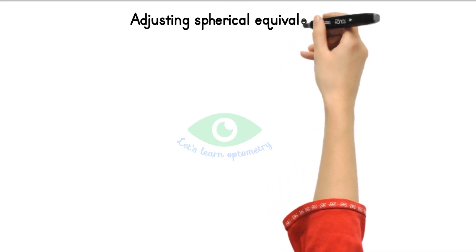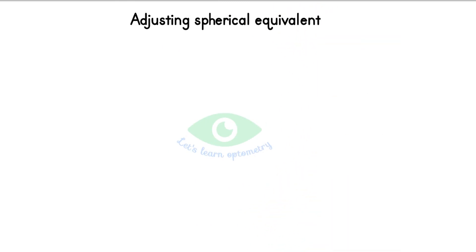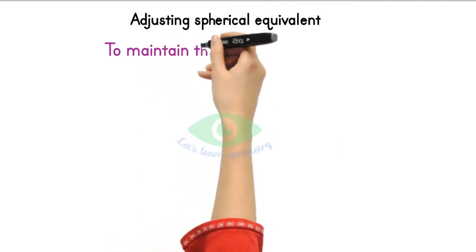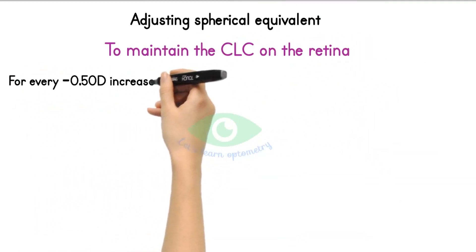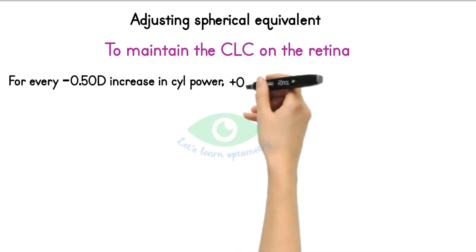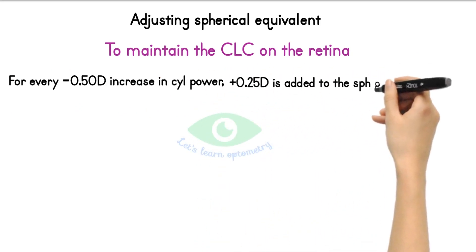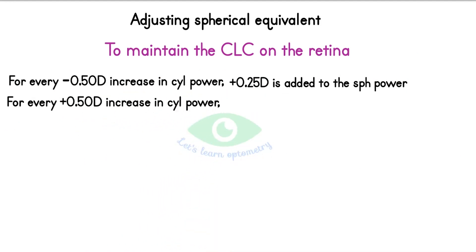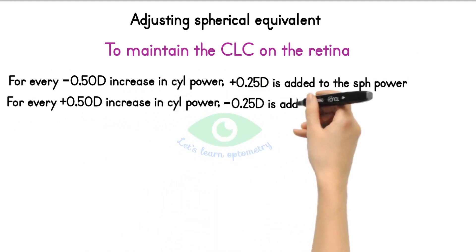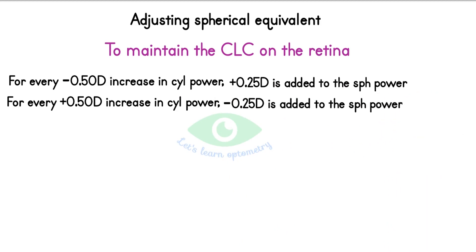Adjusting the spherical equivalent: After power refinement, we need to adjust the spherical power based on the change in cylindrical power. This is done to maintain the circle of least confusion on the retina. For every minus 0.5-diopter increase in cylindrical power, add plus 0.25 to the spherical power. For every plus 0.5-diopter increase in cylindrical power, subtract 0.25 from the spherical power.